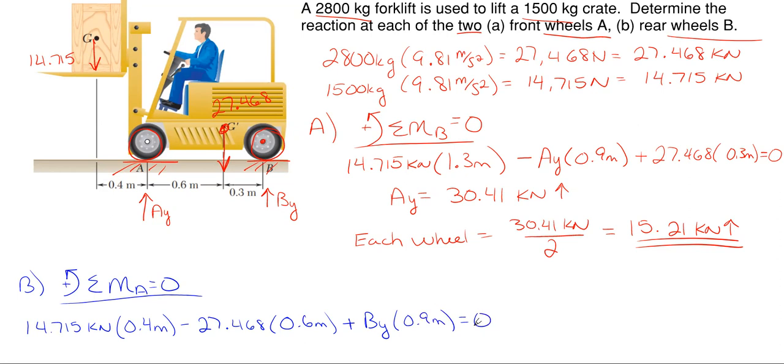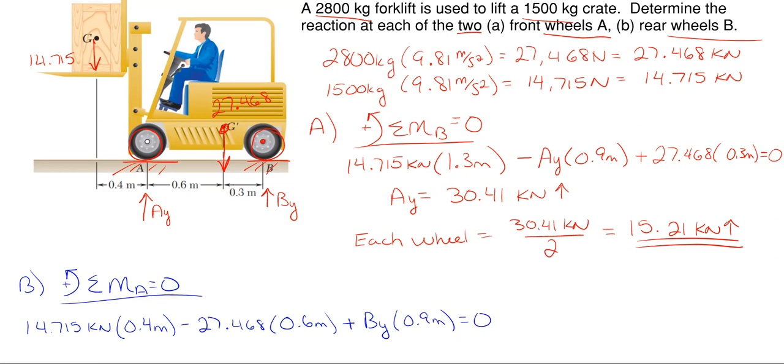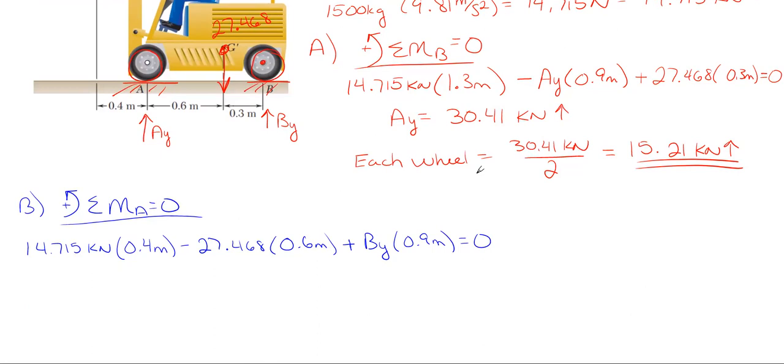And that's all we have equal to zero. Easy equation to solve there. By is your only unknown, so rearrange and solve for it. By will pop out to be 11.77 kilonewtons. It came out to be a positive number, so I know my original arrow direction of up was correct.